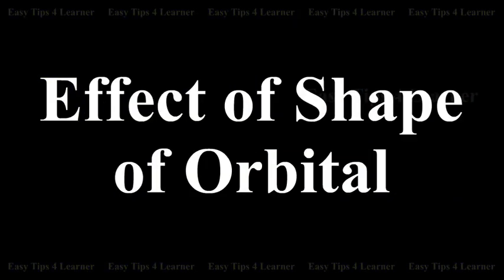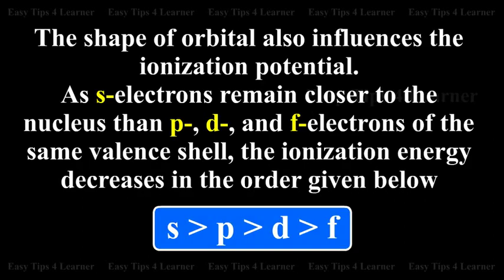The shape of orbital also influences the ionization potential. As s-electrons remain closer to the nucleus than p-, d-, and f-electrons of the same valence shell, the ionization energy decreases in the order given below.